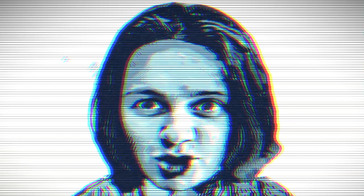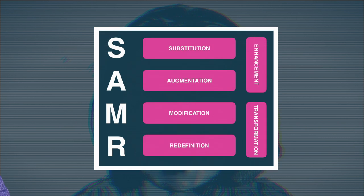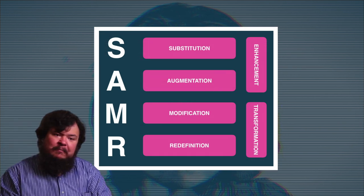The SAMR model is divided into four online learning driven parts. Its degrees of sophistication increases as we progress through the four tiers, and thus its transformative impact is amplified too. These tiers are substitution, augmentation, modification, and redefinition.